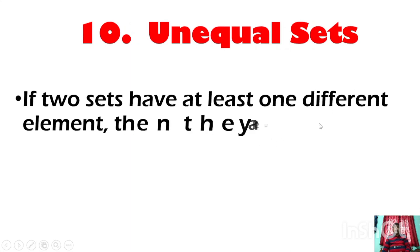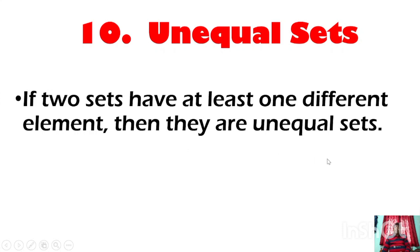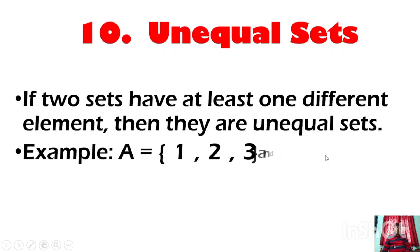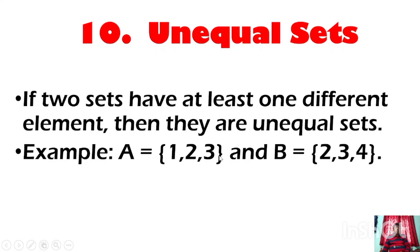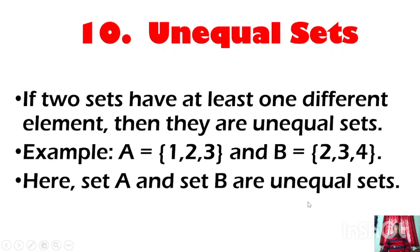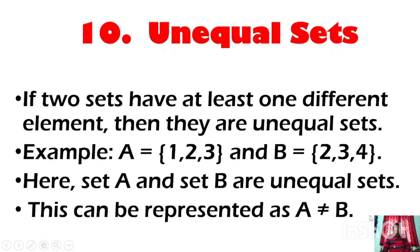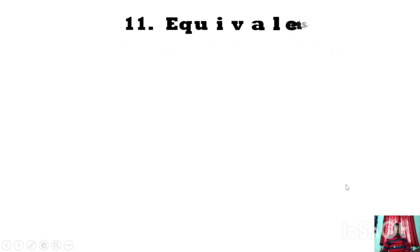Unequal sets: if two sets have at least one different element, then they are unequal sets. For example, set A = {1, 2, 3} and set B = {2, 3, 4}. Here 4 is an element in set B but 4 is not an element in set A, so both sets are unequal. We write A ≠ B.